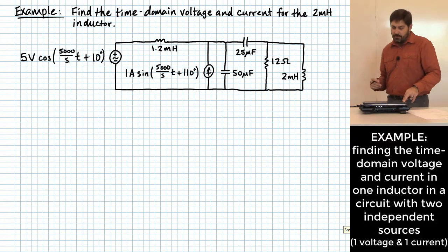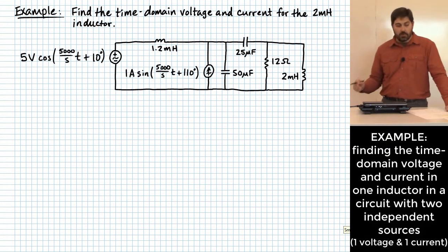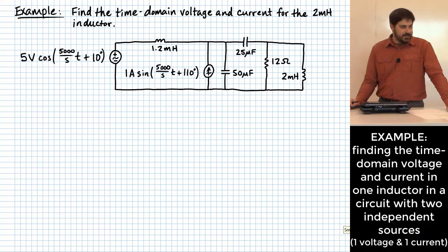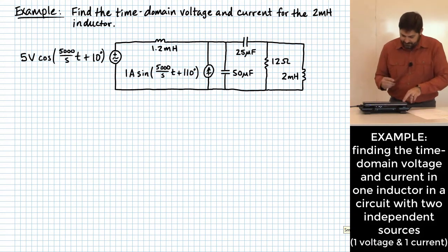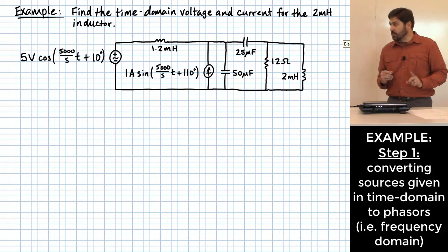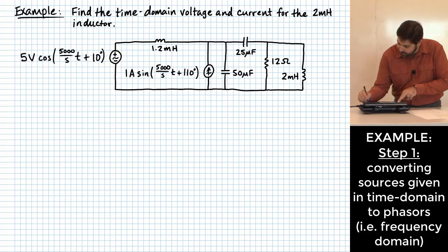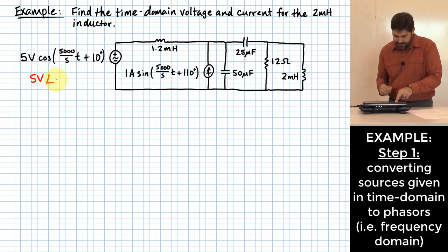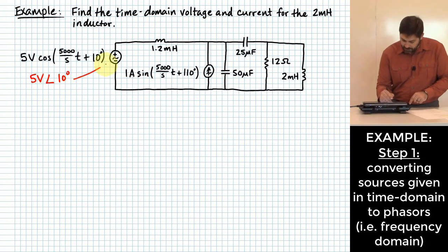Here's our problem: Find the time domain voltage and current for the 2 millihenry inductor. What is step one? Step one said take any of your sources that might be expressed in time domain and express them in frequency domain. So I do that for the voltage source over here. It becomes 5 volts at an angle of 10 degrees. The reason I could just do that one directly is that is already expressed in terms of a cosine function.